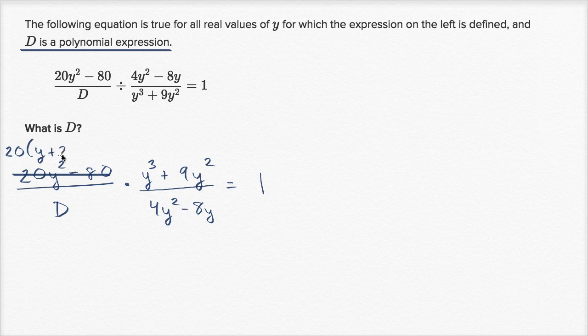So let me write that, y plus 2 times y minus 2. Alright, this down here, 4y-squared minus 8y, well it looks like we can factor out a 4y, and so this is going to be the same thing as 4y times y minus 2.